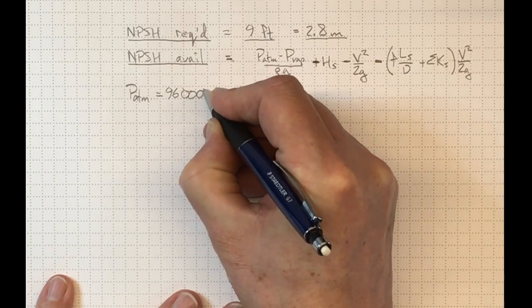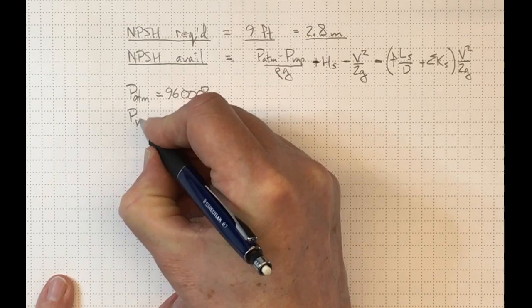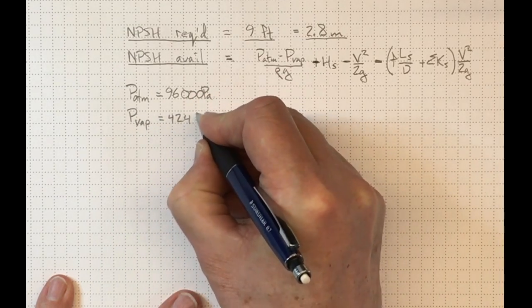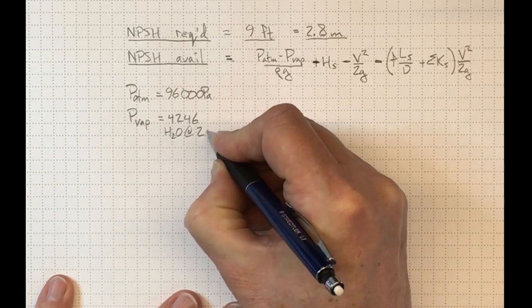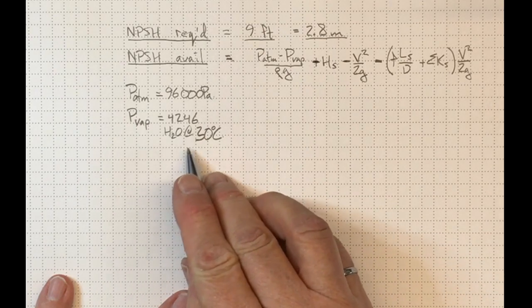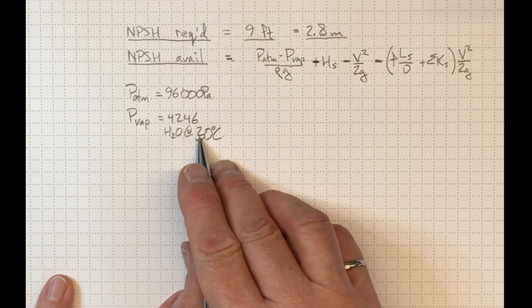Our vapor pressure. Well, the vapor pressure is 4246 I get from my tables for water at 30 degrees C. So we could imagine the water might conceivably be reasonably warm coming in from the lake.